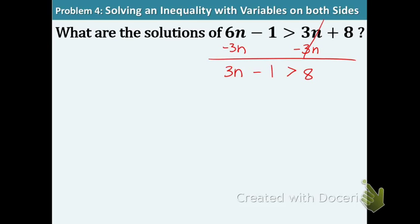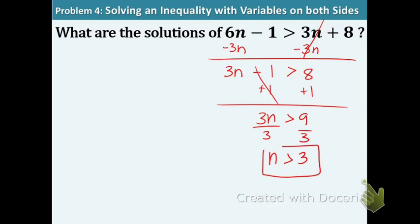Now we have a two-step equation. We're going to bring the negative 1 over, so we're adding 1. Add 1 to both sides. And so now we have 3n is greater than 9. Divide both sides by 3, because that's the opposite of multiplication. And you get n is greater than 3. And that's the solution for this example.